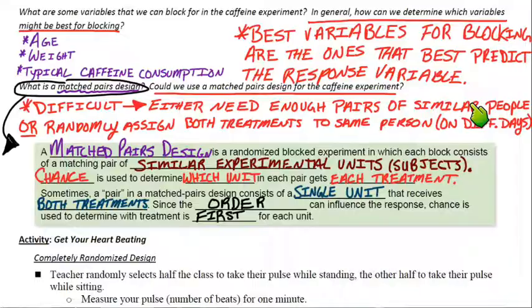So I think to find pairs of similar people, that would be really difficult and really not very practical and our results really wouldn't be worth a whole lot. It would be more, I think, practical to do maybe different days to give the treatments. Again, you couldn't do caffeine treatments on the same day because they would no longer be independent. They would absolutely be influencing each other.